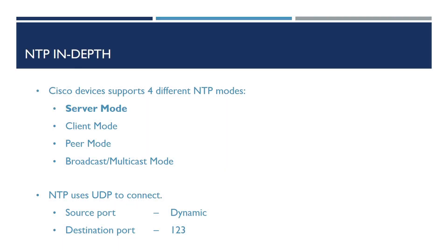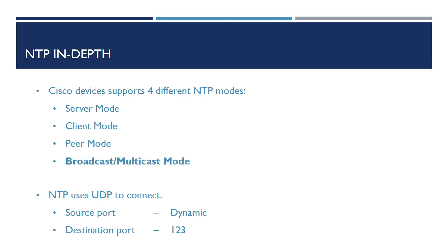There are four modes that Cisco devices can operate in. These are server mode, allowing our selected device to operate as an NTP server to our clients within the network; client mode, allowing connecting our device to an NTP server for an authoritative time; and peer mode, allowing two devices to synchronize their time between each other.